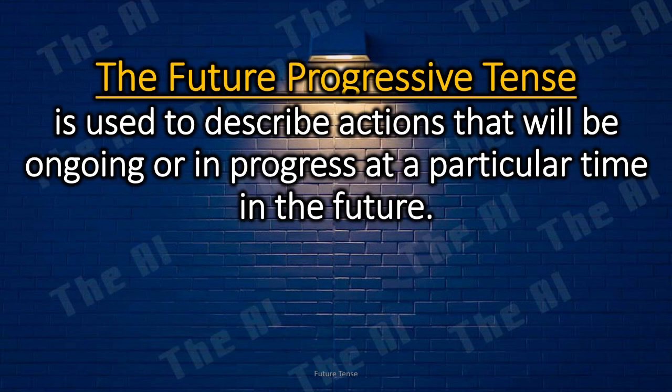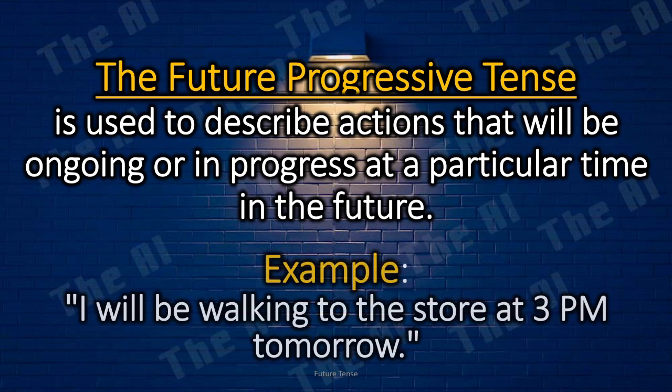The future progressive tense is used to describe actions that will be ongoing or in progress at a particular time in the future. For example, 'I will be walking to the store at 3pm tomorrow.'